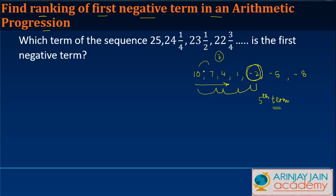you need to find the first negative term of a given arithmetic progression where certain data is provided? So let's say you have a question: which term of the sequence 25, 24¼, 23